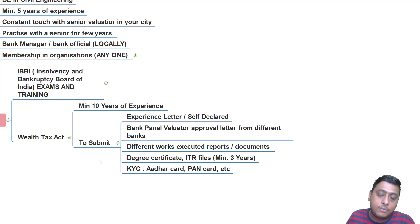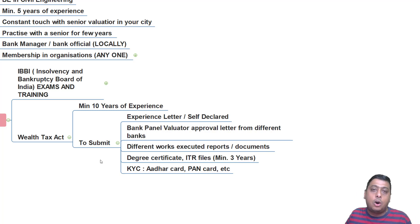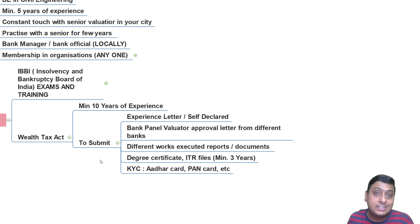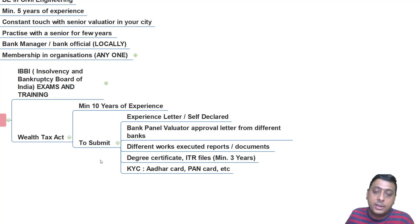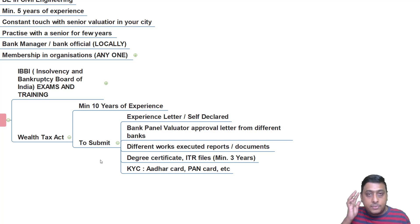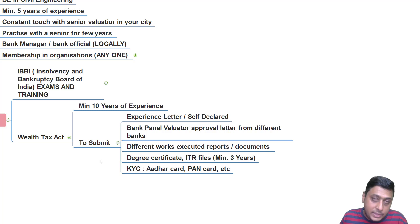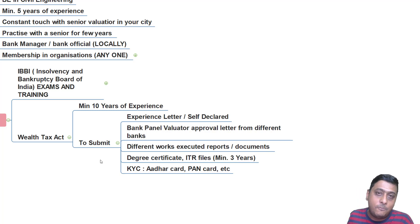Along with that, you have to give supporting documents — for example, if you are a bank valuer of SBI, the letter of approval they gave you should also be submitted. Different bank panel valuations you have already conducted — copies of those valuations you have to attach and give. For example, even if you are not a bank panel valuator but have 10 years of experience as a civil engineer, structural engineer, or architect, you can still become a valuer under the Wealth Tax Act by sharing your construction and design experiences.